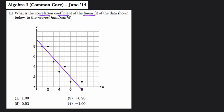So again, the correlation coefficient is measuring how well do these points fit, or how close are they to the line that we're drawing? Now, look at our four choices. We've got 1, negative 0.93, positive 0.93, and negative 1.